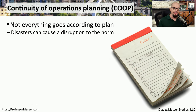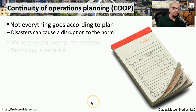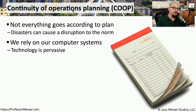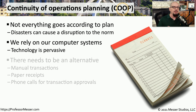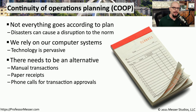Sometimes when disaster occurs, there's a delay before the recovery process can begin. In those situations, you need some type of alternative plan so you can keep the business up and running. We refer to this as continuity of operations planning, or COOP — because even though we commonly rely on our computer systems to provide applications, there may be a non-technical way to perform the same functions.